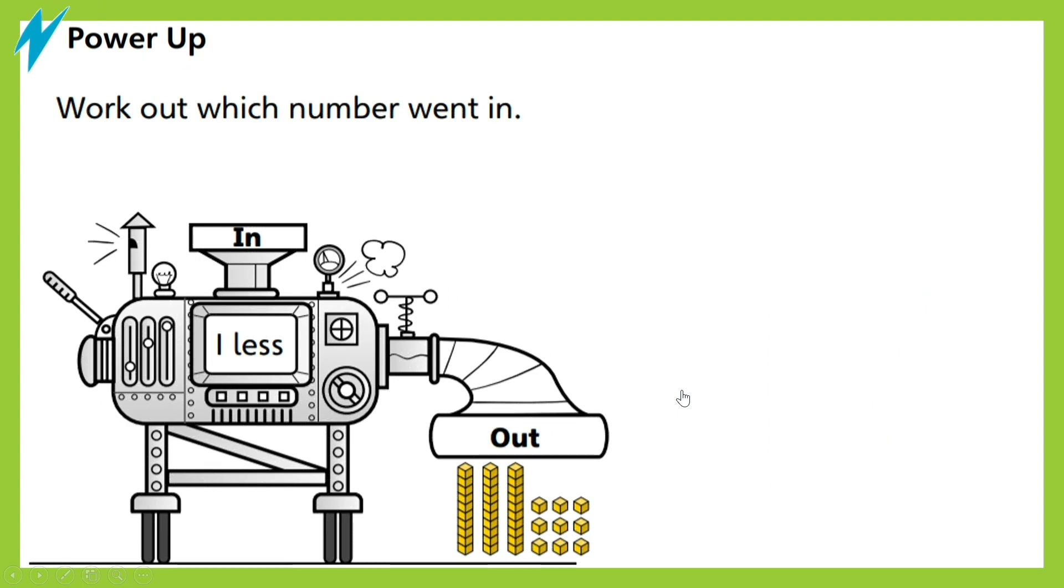Look at this machine. Work out which number went in. I'll give you a few seconds to think about it. Okay, so let's see first what number came out. Can you say what number this represents? That's right, it's 39. Three tens and nine ones makes 39.